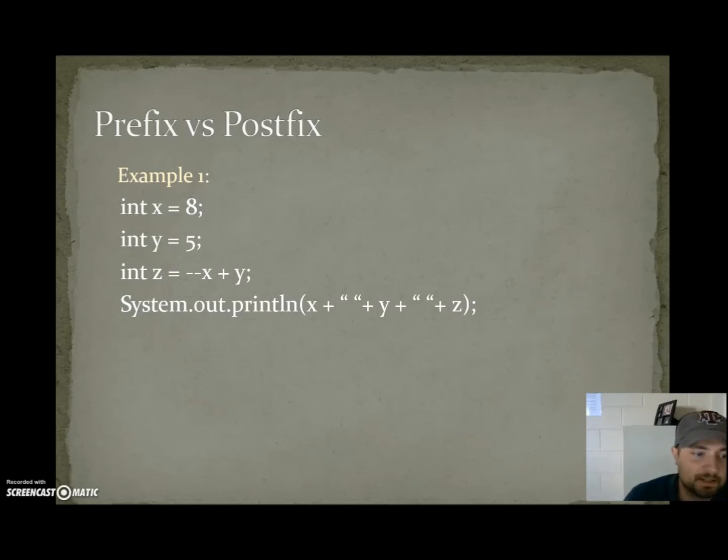Prefix versus postfix, example one. We got x equals 8, y equals 5. Now we're getting ready to do z equals --x plus y. Notice minus minus comes first, so first thing we do is change x to 7. Then we use the new value in the equation because it was prefix: make the change first. So 7 plus 5, z would be equal to 12. If we were to print x, that would be 7. Y would be 5, and z would be 12.